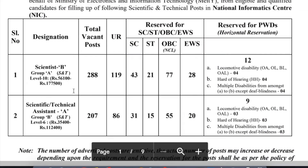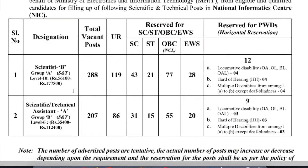First, Scientist B, Group A. For the salary, 56,100 plus 1,077. For the total vacancy posts, 288. Community-wise breakup is available.